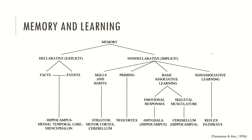Now let's take a more neurobiological model of memory. Memory may be divided into declarative memory or non-declarative memory. Declarative memory is divided into facts and events and tends to be stored in the hippocampus, the medial temporal lobe, and the diencephalon. Non-declarative memory, described as implicit memory, encompasses skills and habits stored in the striatum, motor cortex and cerebellum; priming memory associated with the neocortex; and basic associative learning, which includes emotional responses stored in the amygdala and skeletal musculature patterns stored in the cerebellum, both connected with the hippocampus. Finally, non-associative learning is associated with reflex pathways.